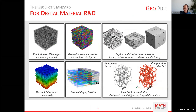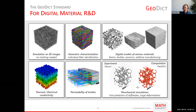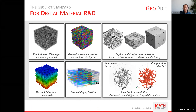In contrast to typical finite element software, the GeoDict standard for digital material research and development simulates directly on the 3D image and requires no meshing. Geometric characterization may be performed on imported images as a basis for designing digital models of various materials, including thermal and electrical conductivity, permeability, and mechanical properties — as shown here comparing experimental and simulated compression of a foam geometry, a result of a collaboration with TESCAN instruments.